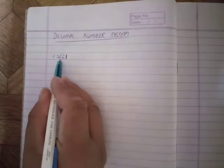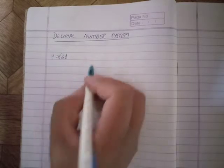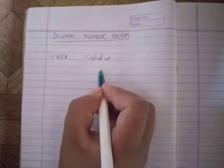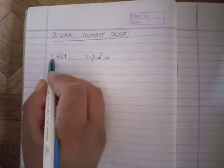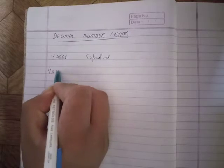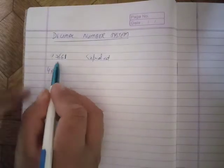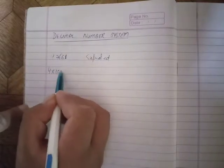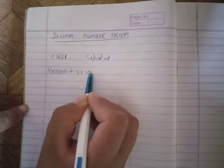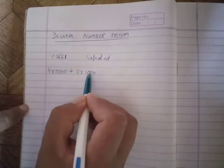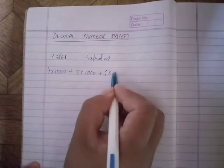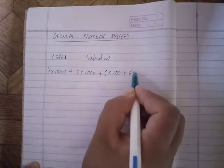This is the number. If you expand it, you will say that the number is 4 into 10 to the power 1, 2, 3, 4. Plus 7 into 1, 2, 3, 4. Plus 5 into 1, 0.